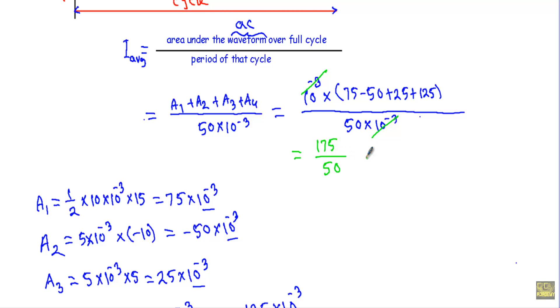This gives I average equal to 3.5 Amperes. So 3.5 Amperes is the average value of the current, I average. That's it. Thank you.